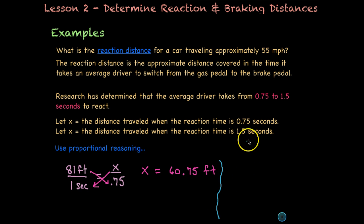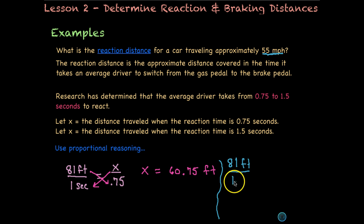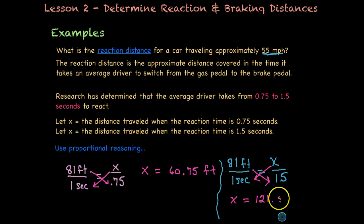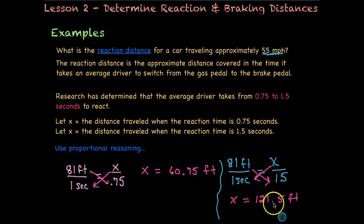Now let's compare if our reaction time is one and a half seconds. Using the same ratio of 81 feet per 1 second, we set x over 1.5 seconds. Cross-multiplying gives 81 times 1.5, which equals 121.5 feet. So almost double — which makes sense because our reaction time is double. And this is just for the reaction time; we have yet to apply the brake.